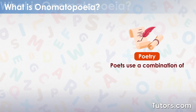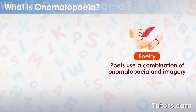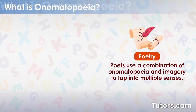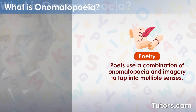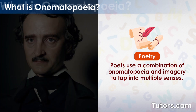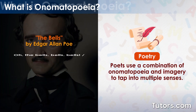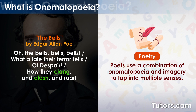Poets use a combination of onomatopoeia and imagery, which allows them to tap into multiple senses. Edgar Allan Poe used onomatopoeia in "The Bells," with words like clang, clash, and roar.